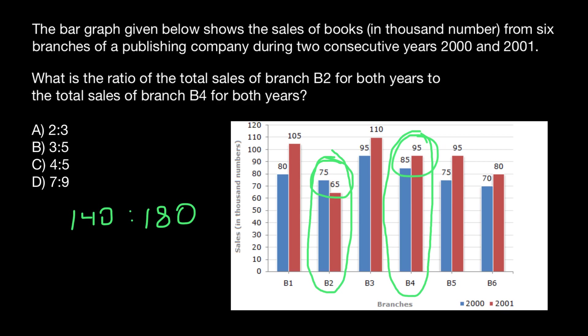There is no such answer among the choices, so let's reduce these numbers. We can divide both numbers by 10 and we get 14 to 18. We can still divide both numbers by 2 and we get 7 to 9. And this is answer D.